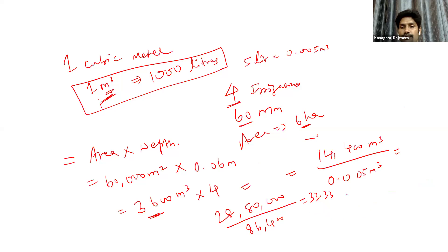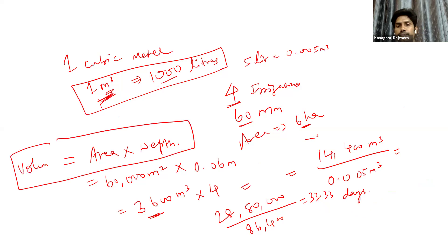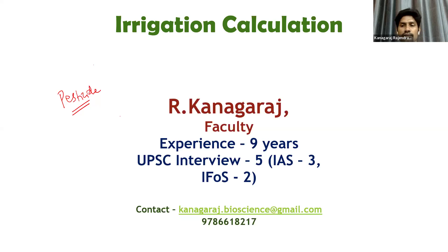So this is a simple calculation to solve this problem. The key formulas to remember are: one cubic meter equals 1000 liters, one hectare equals 10,000 square meters, and volume equals area multiplied by depth. We will see some other irrigation calculations next. Thank you.